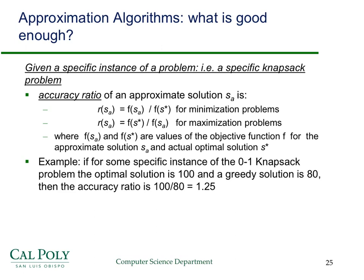In this screencast I want to talk about a couple of approximation algorithms for problems for which there is no polynomial time algorithm. In order to talk about these and compare approximation algorithms, we're going to need some metric to compare them. The metric we're going to use is related to something called the accuracy ratio, and we want it to work for both minimization and maximization problems.